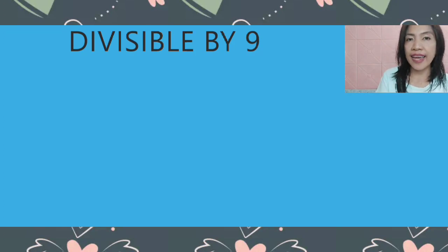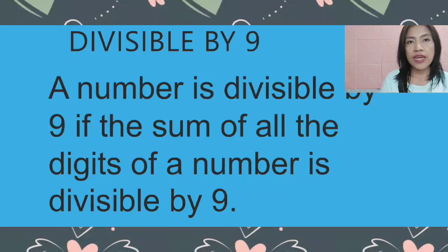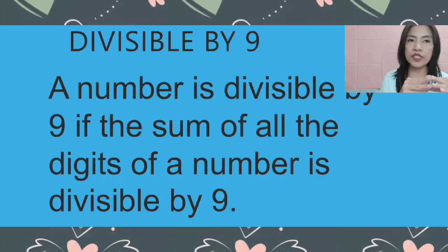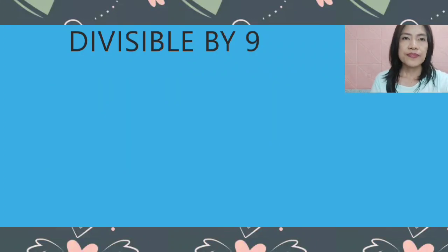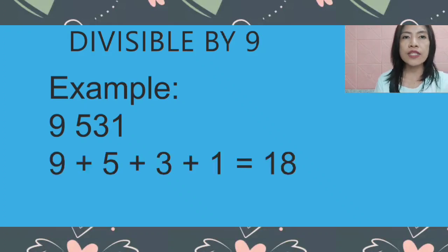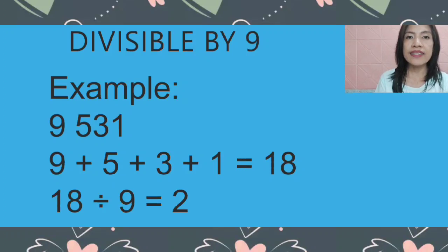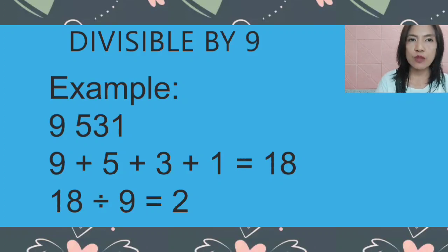Let's have now divisible by 9. A number is divisible by 9 if the sum of all the digits is divisible by 9 — almost the same as divisible by 3, where we add all the digits, but here we divide by 9. Example: 9,531. We add 9 plus 5 plus 3 plus 1 equals 18. 18 divided by 9 equals 2. Therefore, 9,531 is divisible by 9.